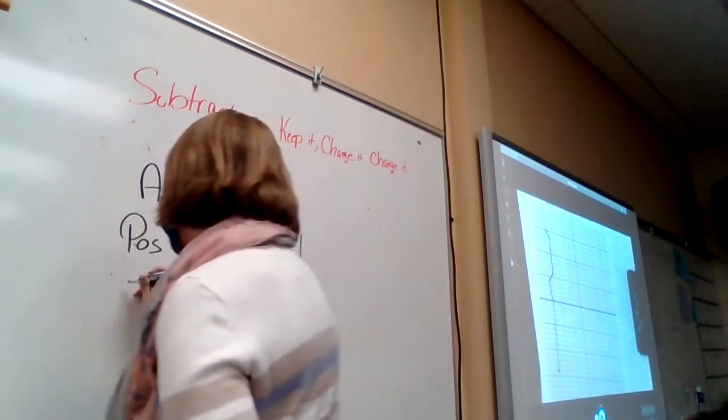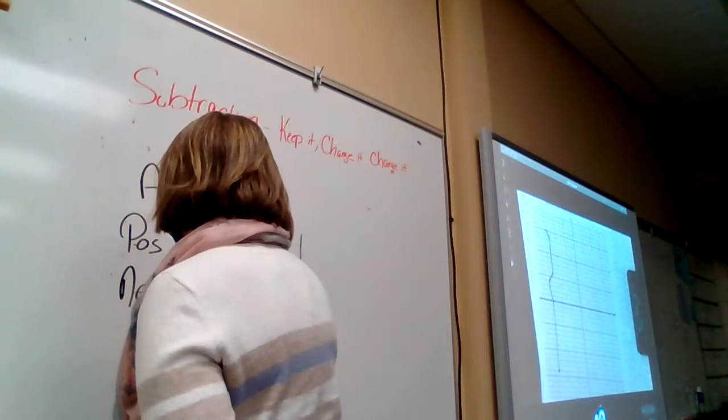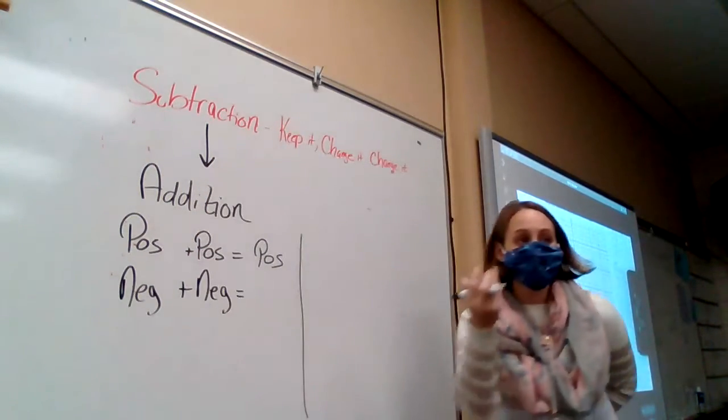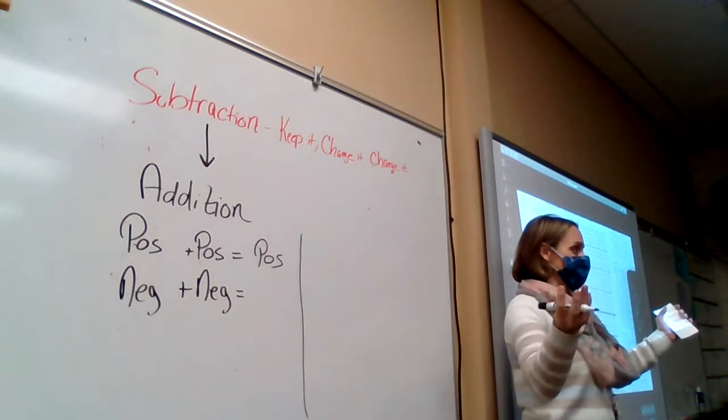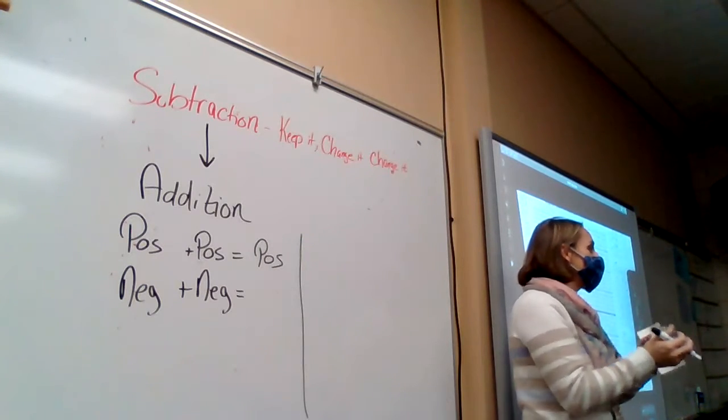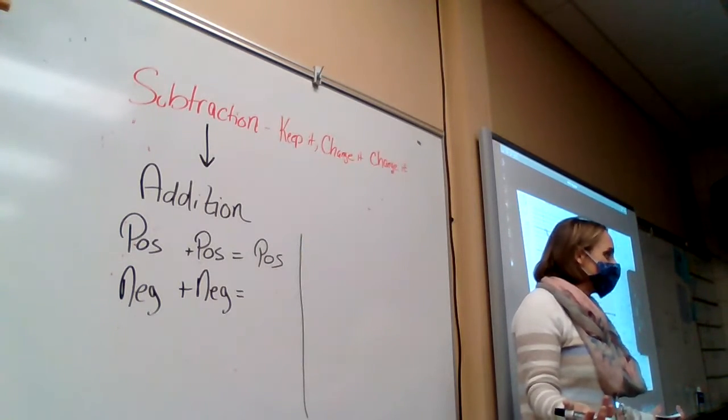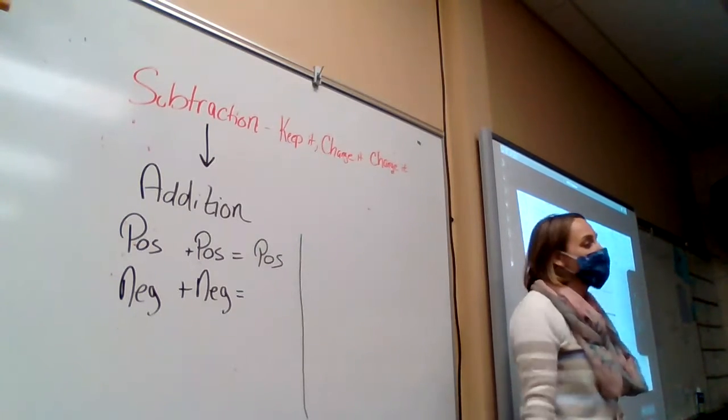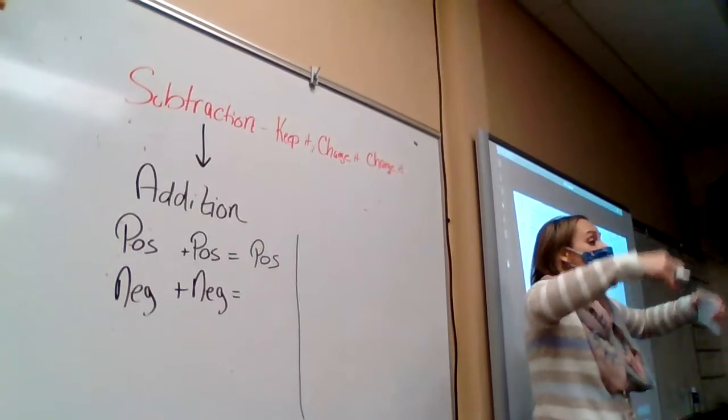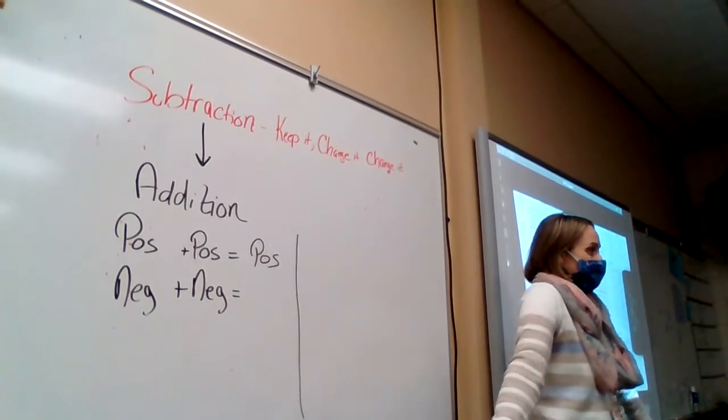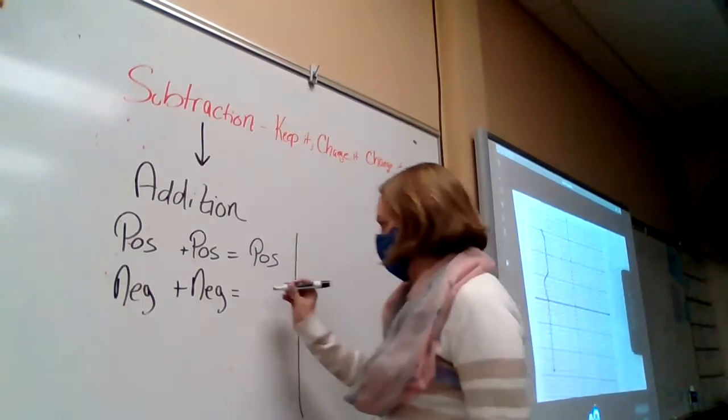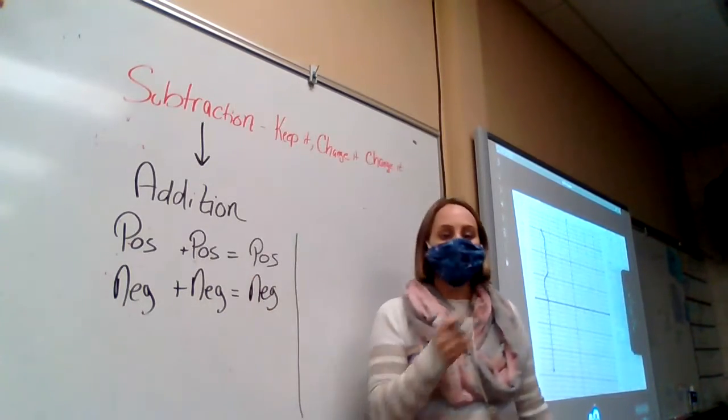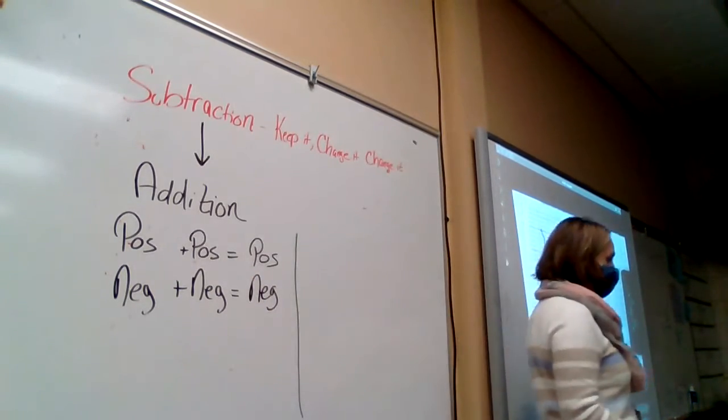If you have a negative number and another negative number, and you put them together, it gets more negative, right? If I owe Nathan $5 and I owe Leah $10 and I put them together, it's still more debt. I'm just owing more money now.